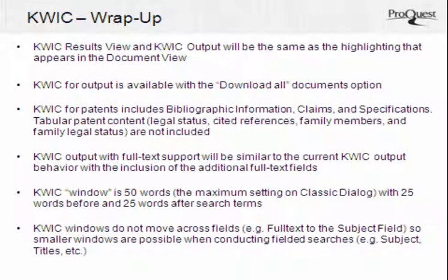For patents, QUIC includes bibliographic information, claims, and specification. QUIC output will include full text if available in the database. The QUIC window is 50 words with 25 before and after search terms. QUIC windows do not move across fields — for example, from full text to the subject field — so smaller windows may be possible when conducting searches in specific fields such as a title field.